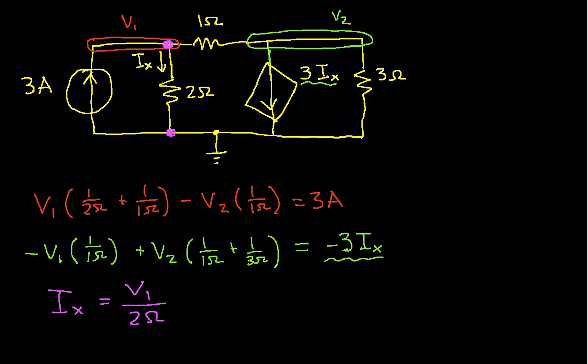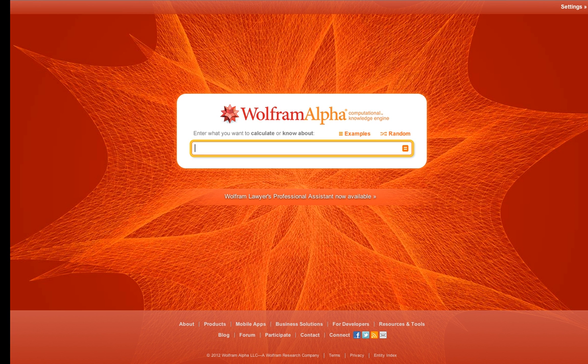The unknowns are our two node voltages and IX. So we can just plug this into an equation solver and that will give us the answer we're after. So if I go to Wolfram Alpha...